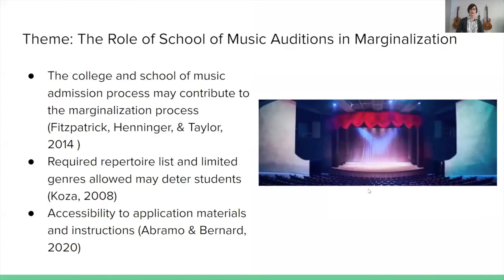The first theme the literature review related to was school music auditions in regards to marginalization. Studies show that college and school music audition processes may contribute to the marginalization process. Things such as required repertoire lists and limited genres allowed for auditions may deter many students from auditioning for college music programs, even if they are musically proficient enough. Accessibility to application materials and instructions may also hinder students — they may not be clear on the expectations for auditions and may not be adequately prepared to be successful on their audition day.